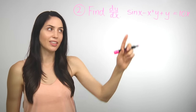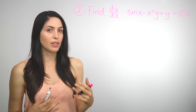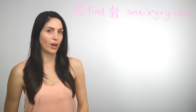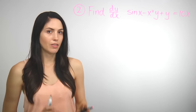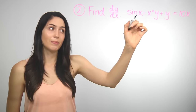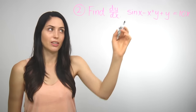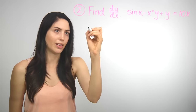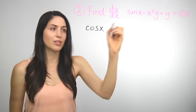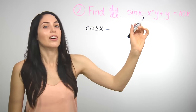Okay, what if you have a function like this one? It's a little more complicated — you'll need to use the product rule and the chain rule. But it starts the same way: take the derivative of both sides with respect to x. The derivative of the first term, sin x, is just cos x. As you probably know, there are no y's to worry about in that term, so we just write cos x.